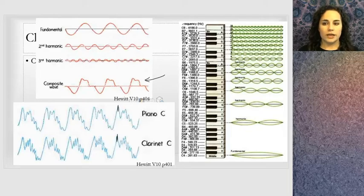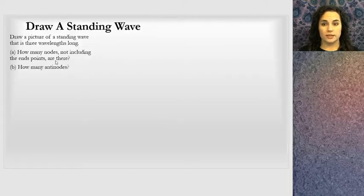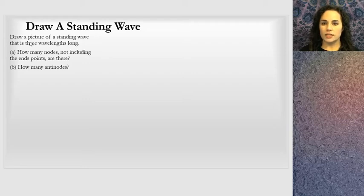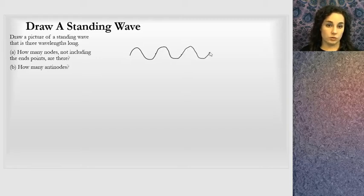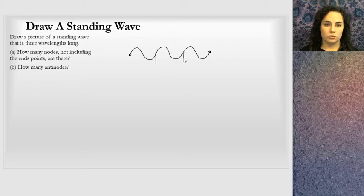The first problem: draw a standing wave that is three wavelengths long. Here's a wave — there's one wavelength, two wavelengths, then three wavelengths. I'll attach it at the ends. Those are the two endpoints. Now I have three complete wavelengths.